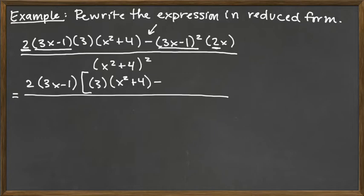Now after the subtraction sign, we did pull out one copy of the 3x minus 1, but since that 3x minus 1 is squared after the subtraction sign, we have one more copy left. So we've got 3x minus 1 left over there. And then we did pull out a 2, but we didn't pull out the x, so that x is still left.